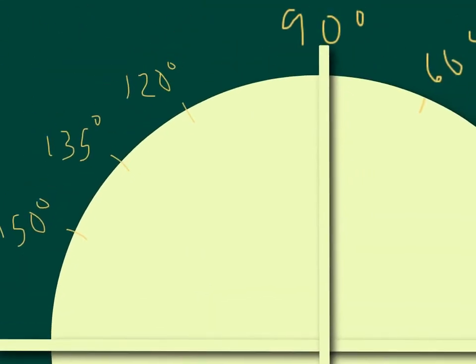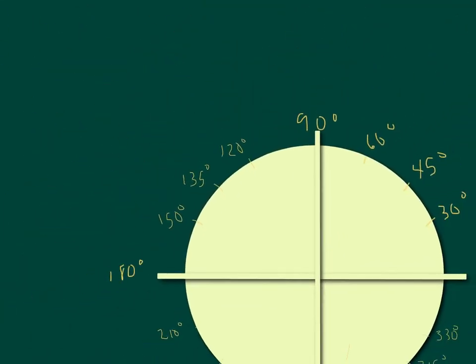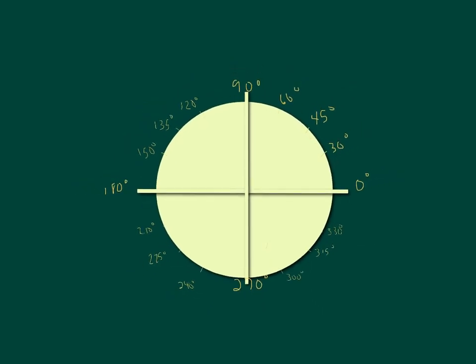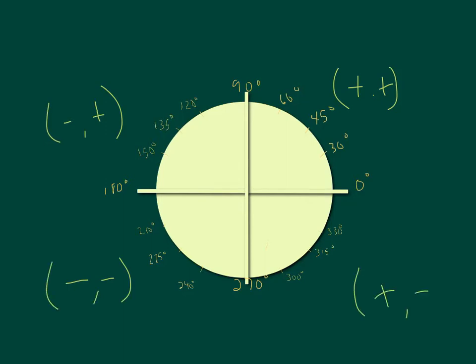Before we get into any numbers, let's remember how the quadrants of our coordinate plane work and what kind of signs we're going to deal with. In quadrant one, ordered pairs go positive, positive. In quadrant two, ordered pairs go negative, positive. In quadrant three, they're both negative. And in quadrant four, it goes positive, negative.